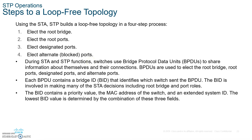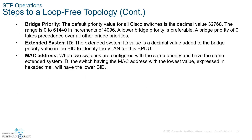First thing that happens: switches use Bridge Protocol Data Units, BPDUs, to share information about themselves and their connections. BPDUs are used to elect root bridges, root ports, designated ports, and alternate ports. Each BPDU contains a bridge ID that identifies which switch sends the BPDU. The bridge ID is involved in making many of the STA — the Spanning Tree Algorithm — decisions, including the root bridge and the port roles. The networks pass their bridge IDs to each other to see who has the lowest bridge ID, and whoever has the lowest bridge ID will be elected as the root bridge.